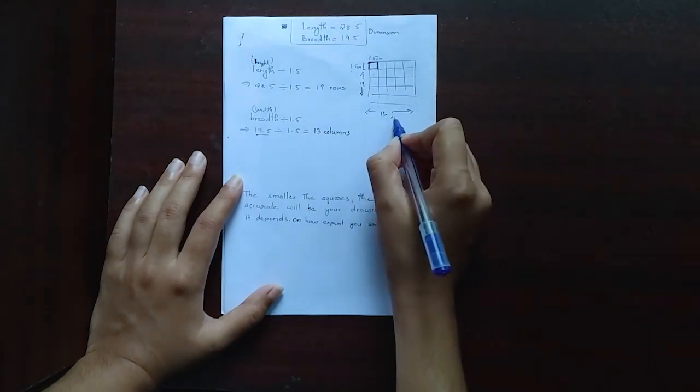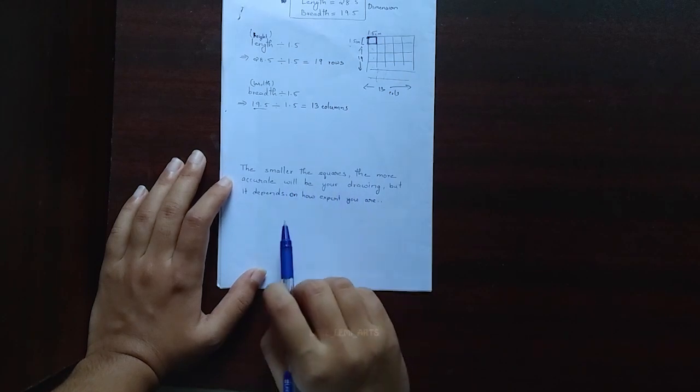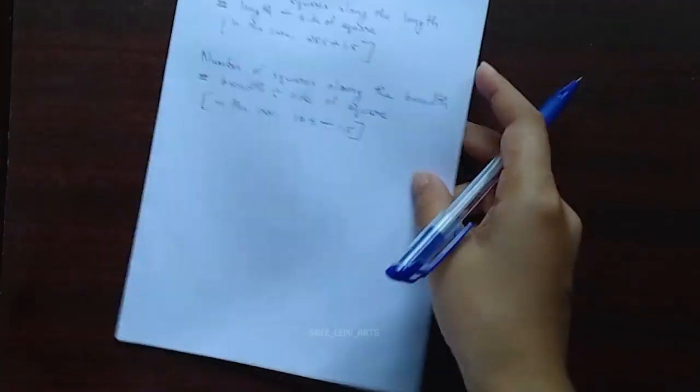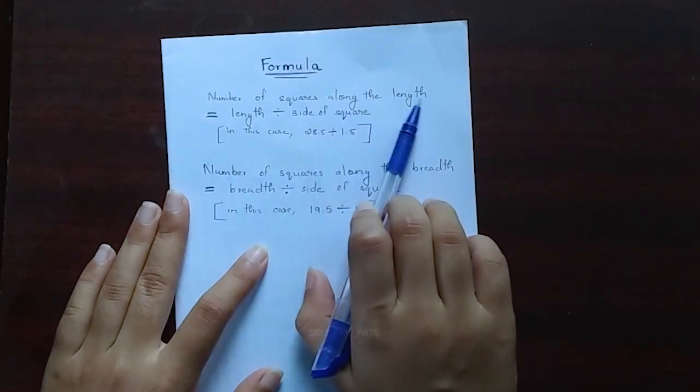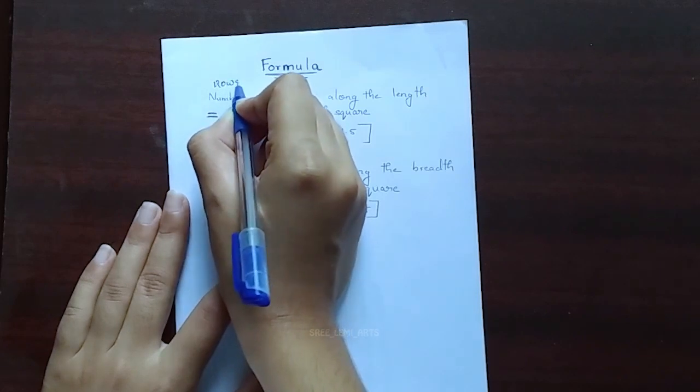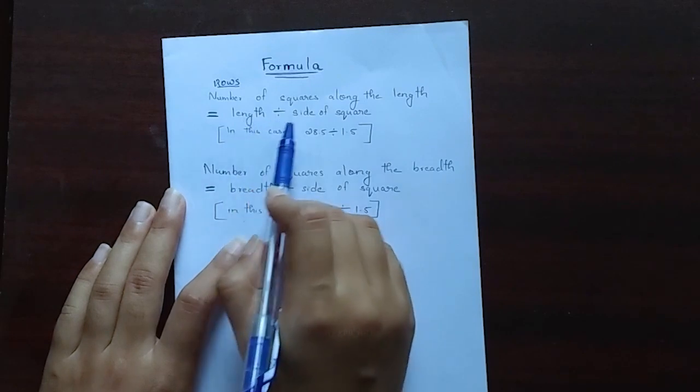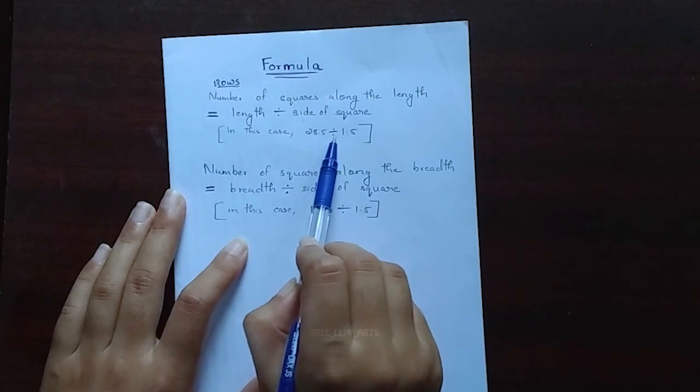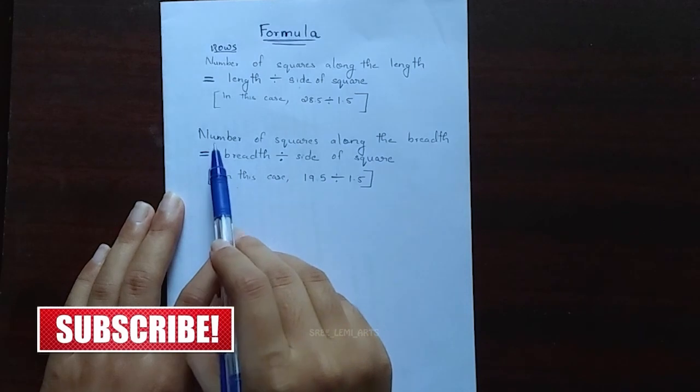The smaller the squares, the more accurate will be your drawing, but it depends on how expert you are. Now if you're confused, here I have a formula for you. So to find the number of squares along the length, that is to find the number of rows, you have to do is the length divided by size of the square. The square box in this case is 28.5 divided by 1.5 and we got the answer is 19.